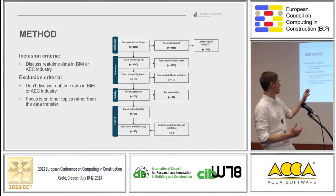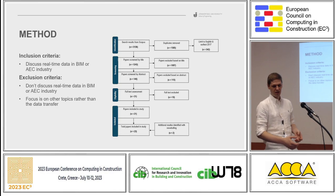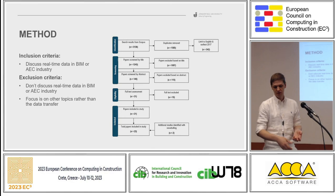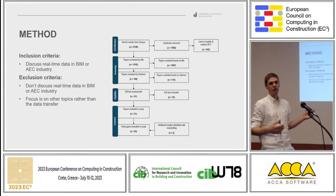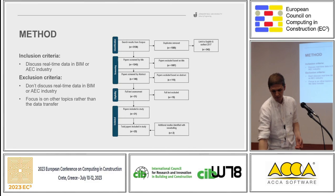This might be hard to read, but the process shown is based on inclusion and exclusion criteria. The papers that were identified got processed down into a final 23 papers that were included in the results.